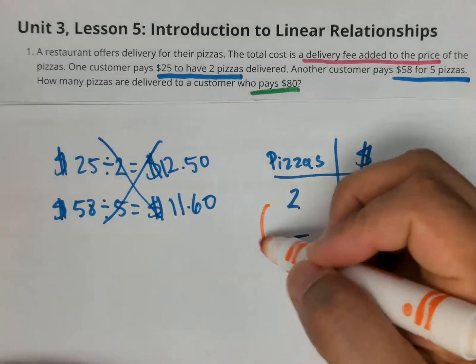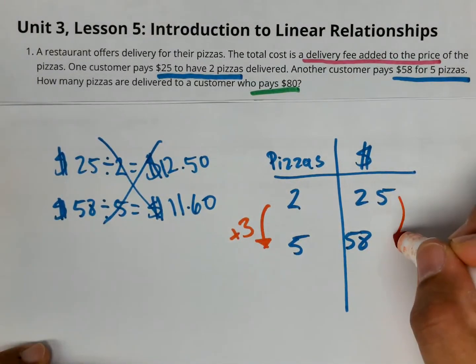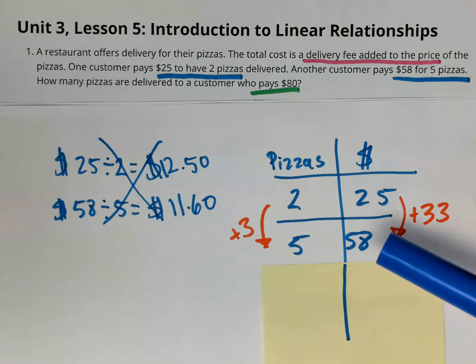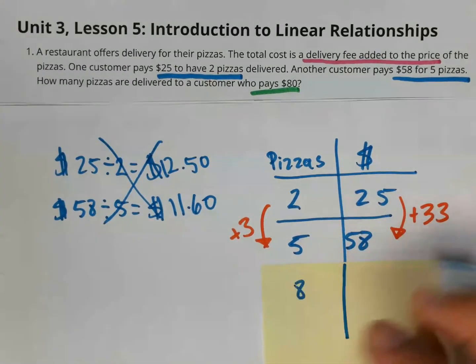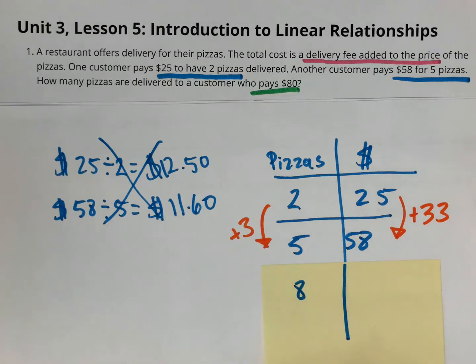So right here I'm adding three pizzas. When I add three pizzas, it adds $33. What these numbers here that I wrote in the orange are telling me is that when I add three pizzas, I add $33. So if I want to do the next three, it would be eight pizzas. How much would that add to the price? It would add $33.